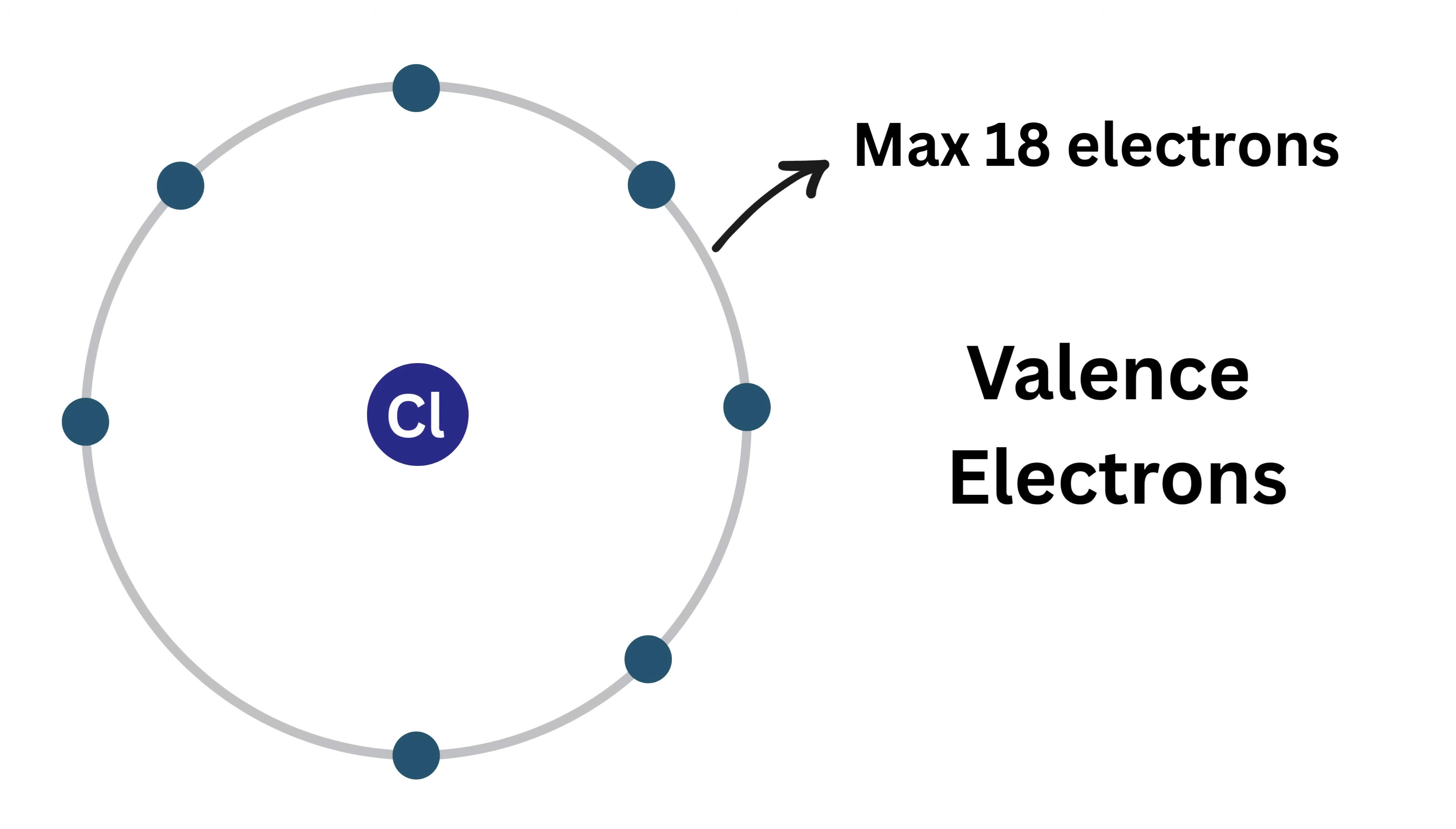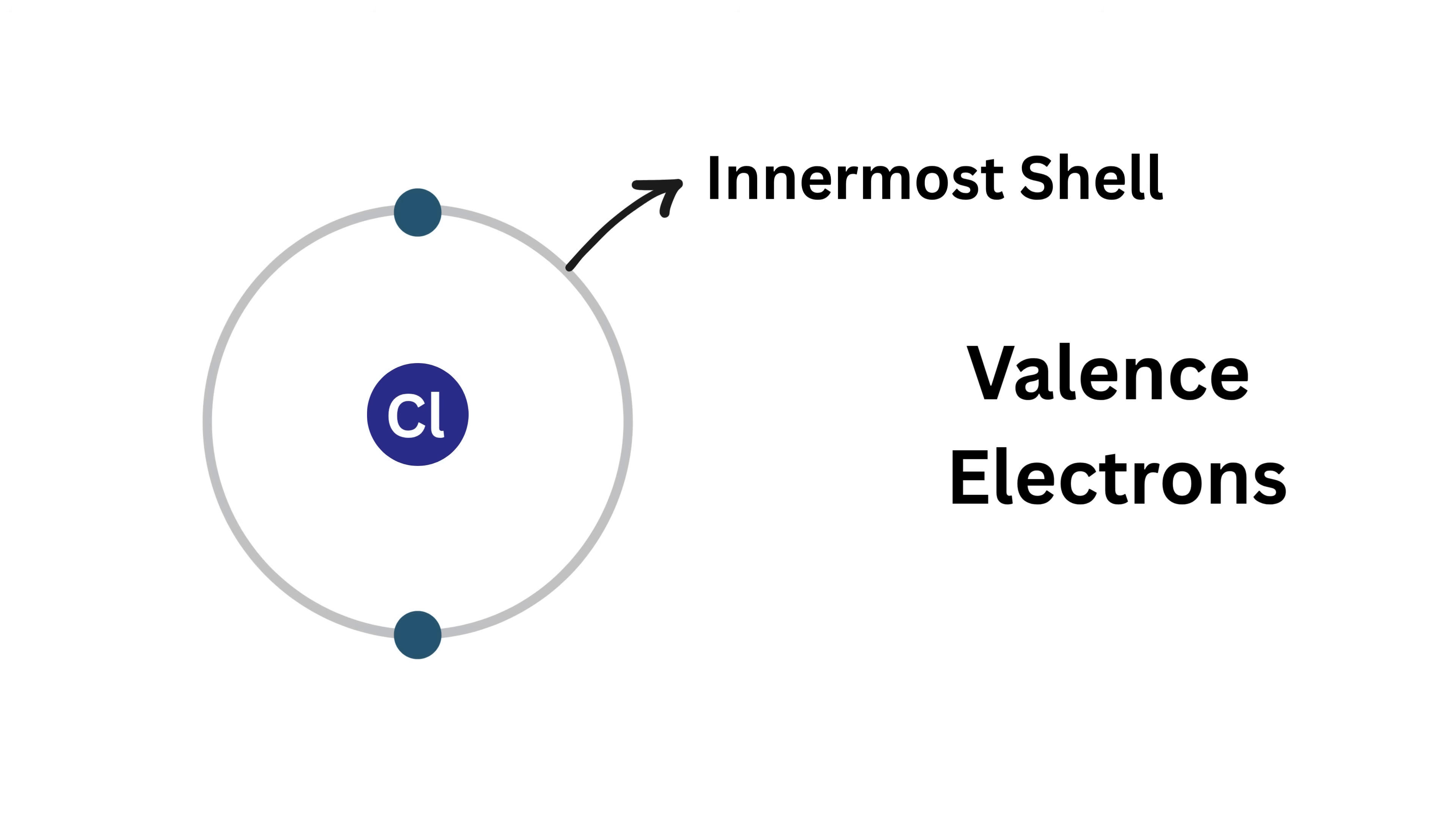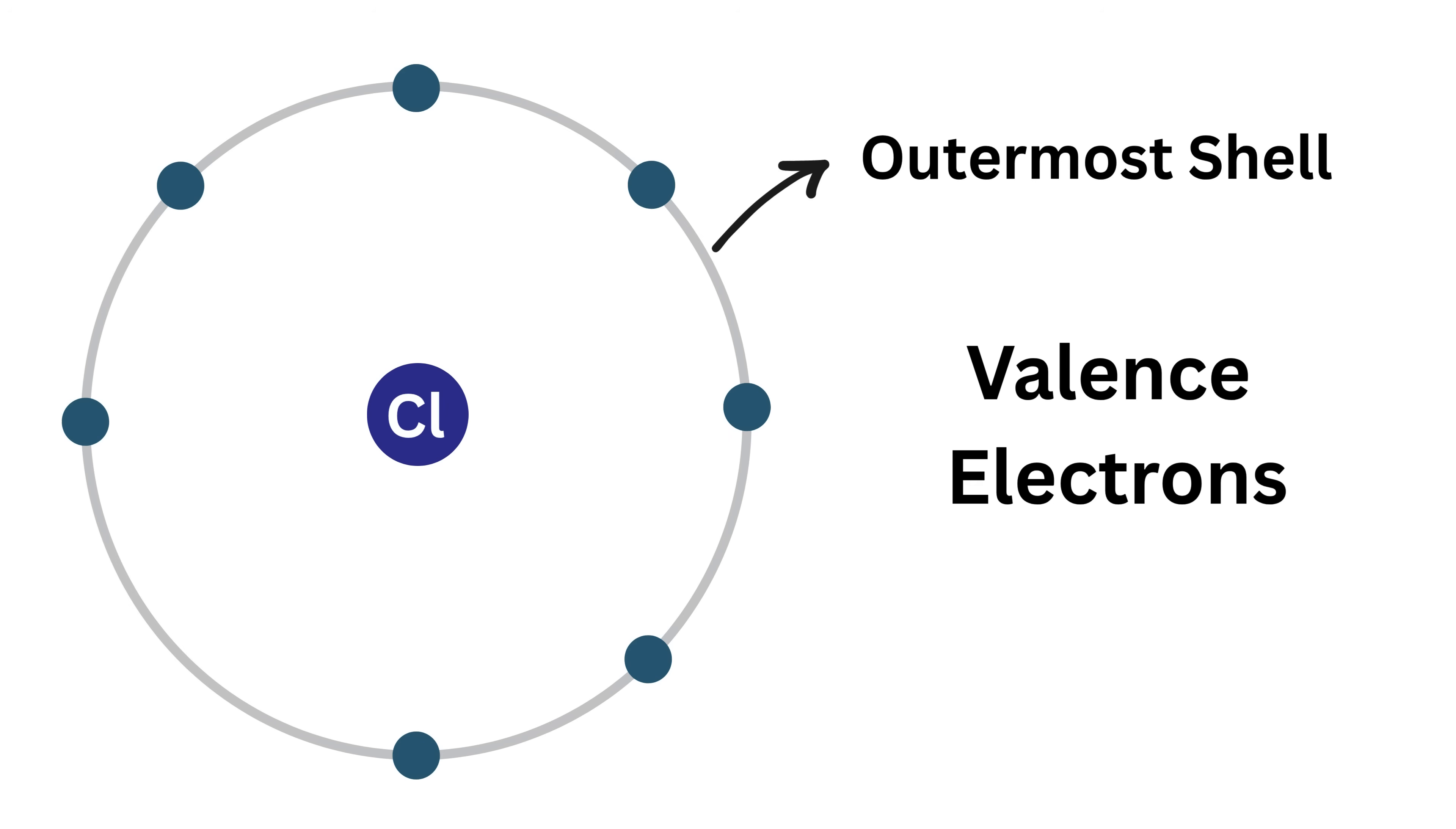The electrons in the inner shells stay tightly bound to the nucleus and rarely take part in chemical bonding, while the electrons in the outermost shell, known as valence electrons, are the most active and important. These valence electrons are the ones that determine how an atom will react or bond with other atoms because they are the easiest to share, gain, or lose when forming molecules or compounds.